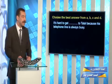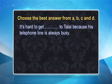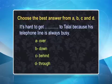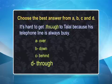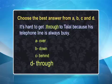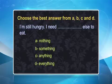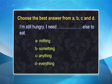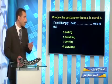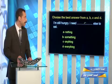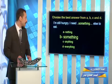Next question: I'm still hungry. I need blank else to eat. The choices are nothing, something, anything, or everything. The person is still hungry so he needs something else to eat to satisfy his hunger. Next: we are the last ones to leave. Blank has already gone home. Is it nobody, somebody, anybody, or everybody? We are the last ones — it means everybody has already gone home.